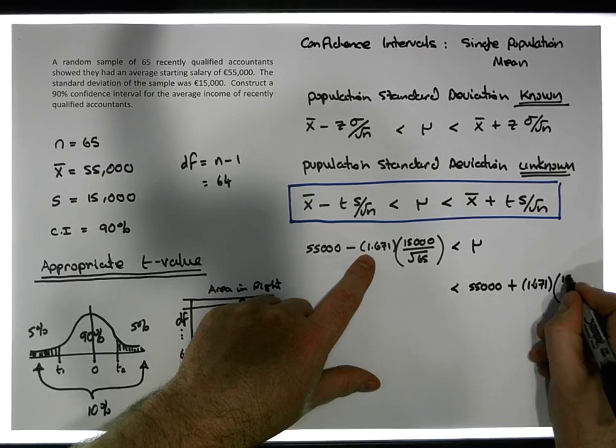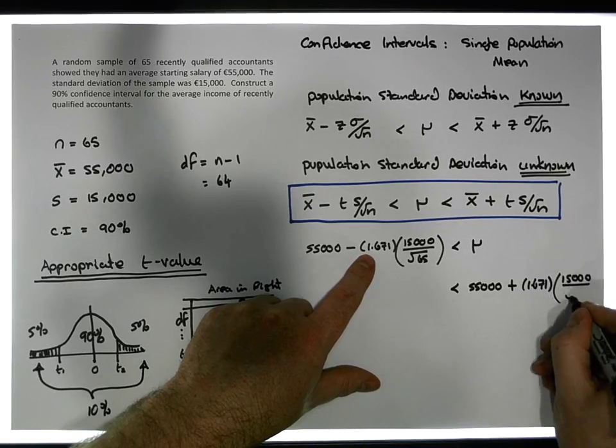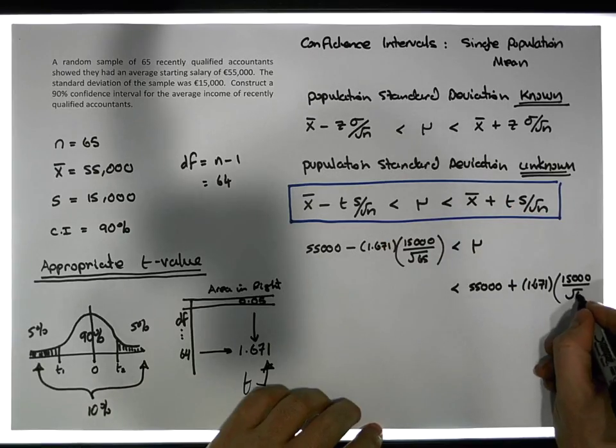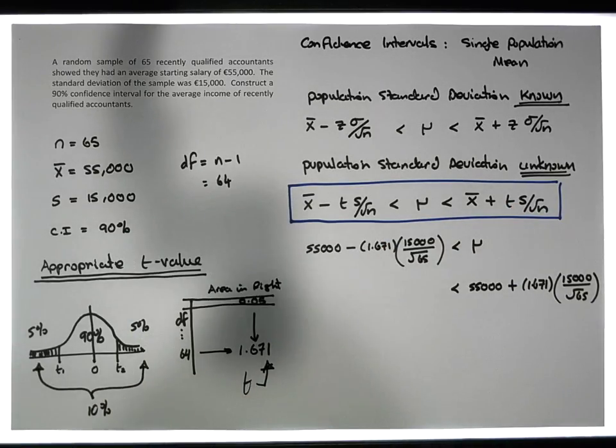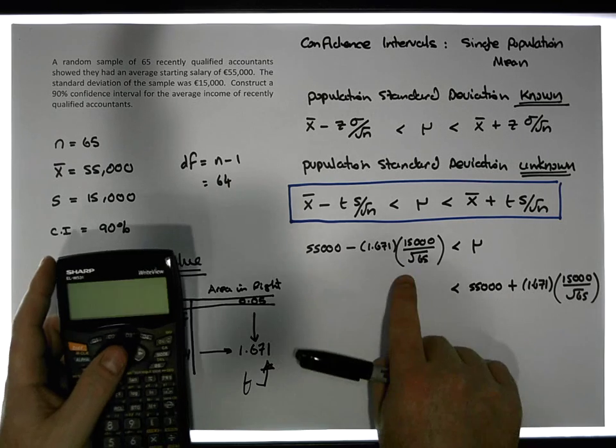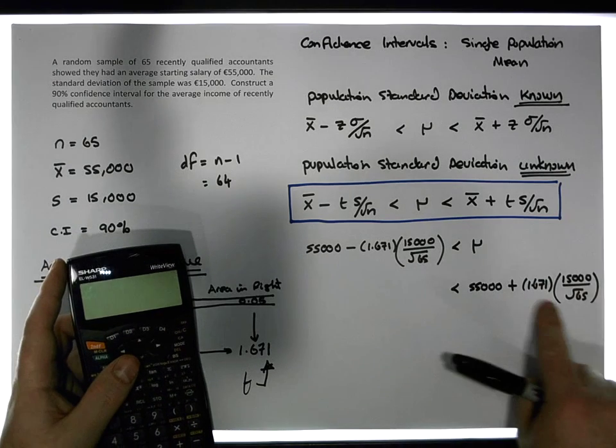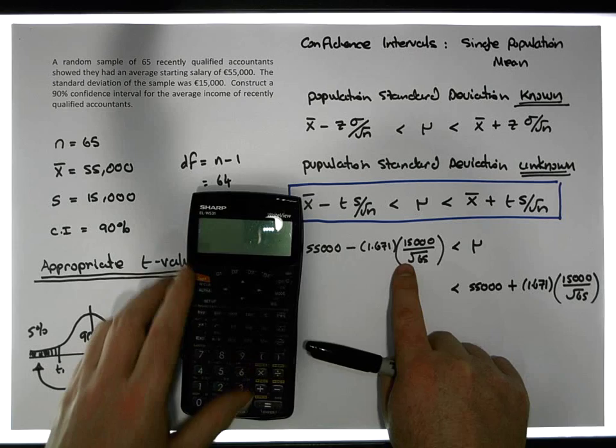Plus 1.671 times 15,000 over the square root of 65. If we want to do that particular calculation, we can see that this term here is the same as this term over here. So we'll just do this calculation. Let's do what's inside the brackets first.